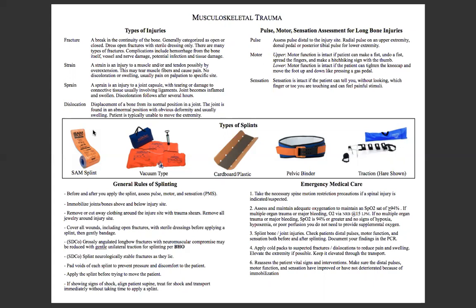Let's start with types of injuries. A fracture is a break in the continuity of the bone, generally categorized as open or closed. Dress open fractures with sterile dressings only. There are many types of fractures. Complications can include hemorrhage from the bone itself, vessel damage, nerve damage, potential infection, and tissue damage. In the field, we always call them suspected fractures since x-rays are needed to confirm. It's really important that you keep the integrity of those open wounds intact, so you only allow sterile surfaces to contact them.